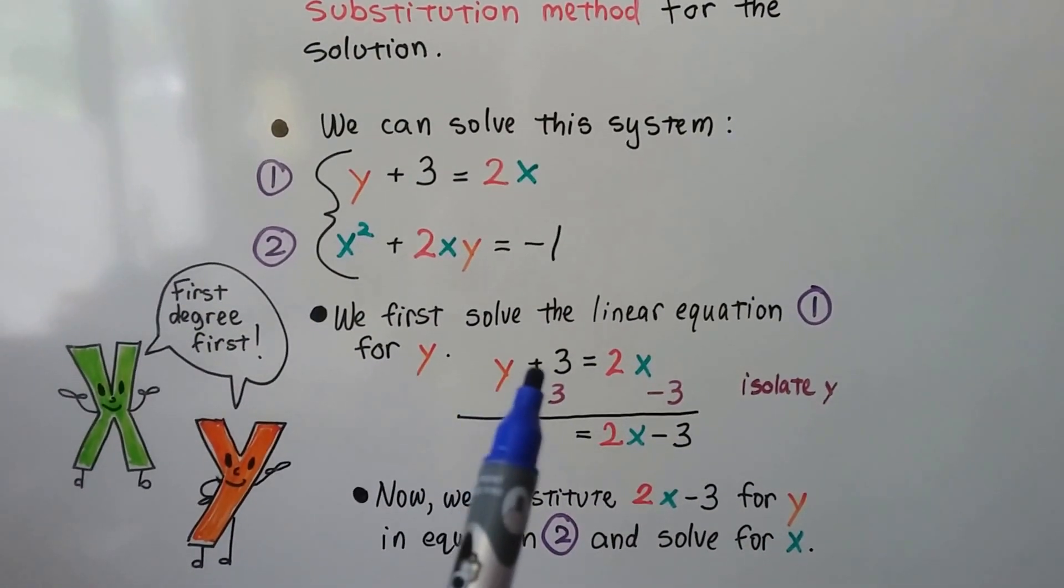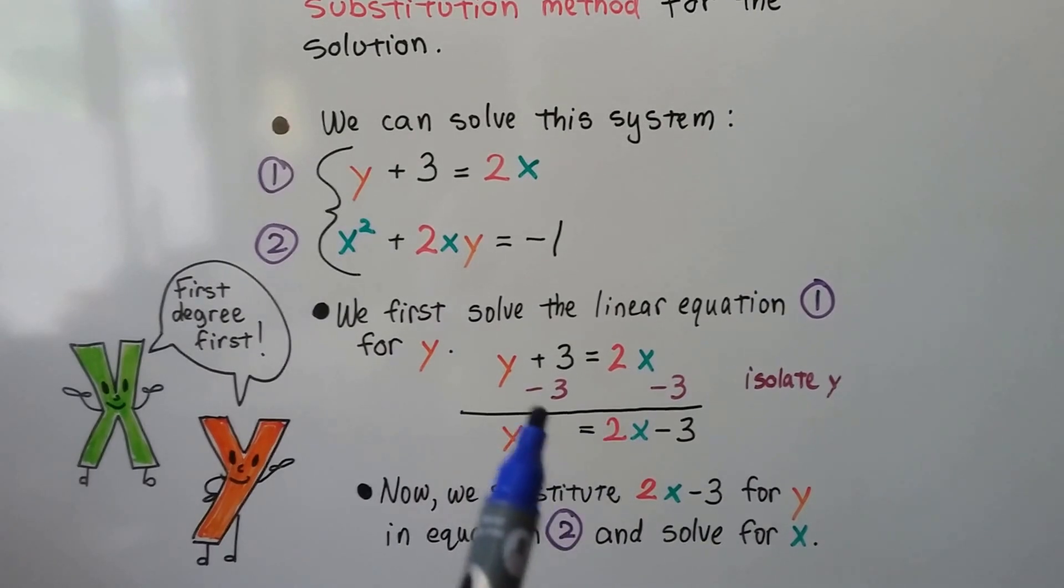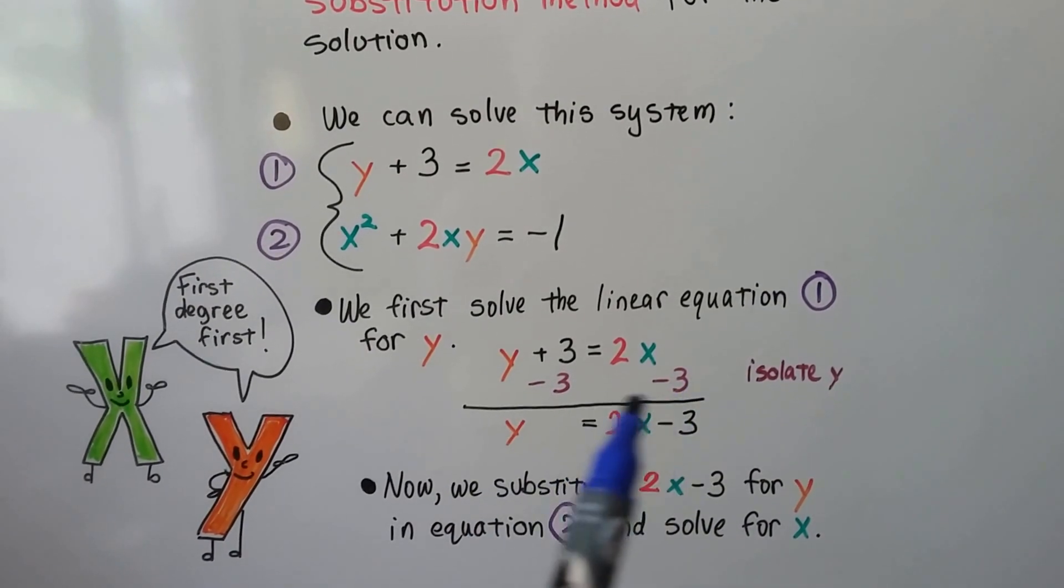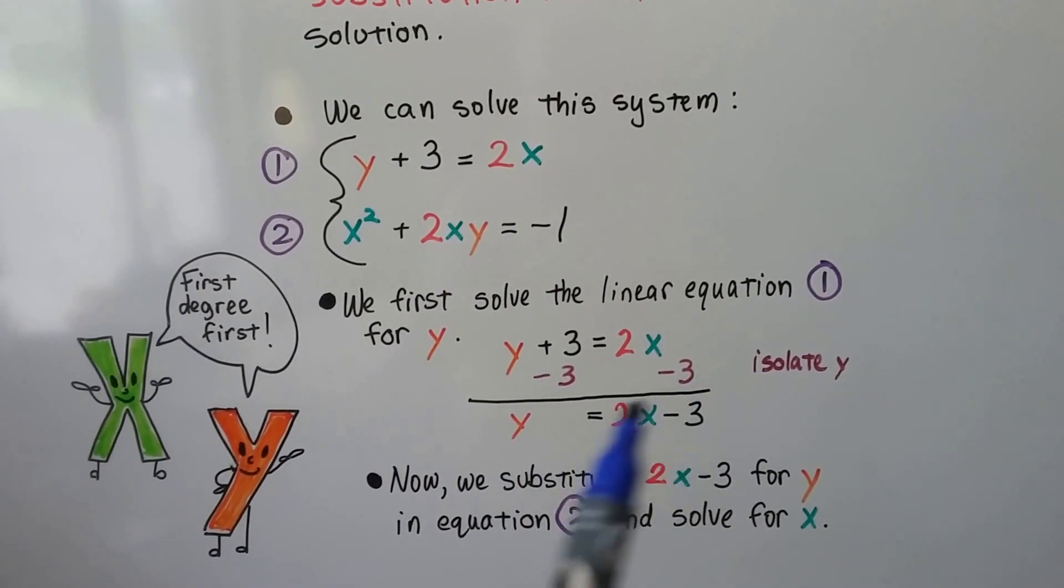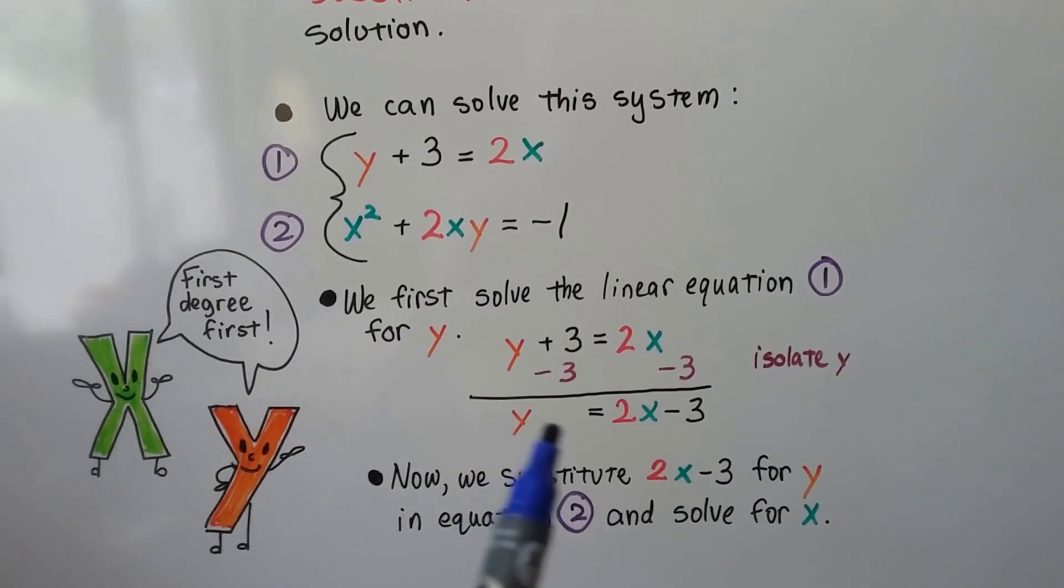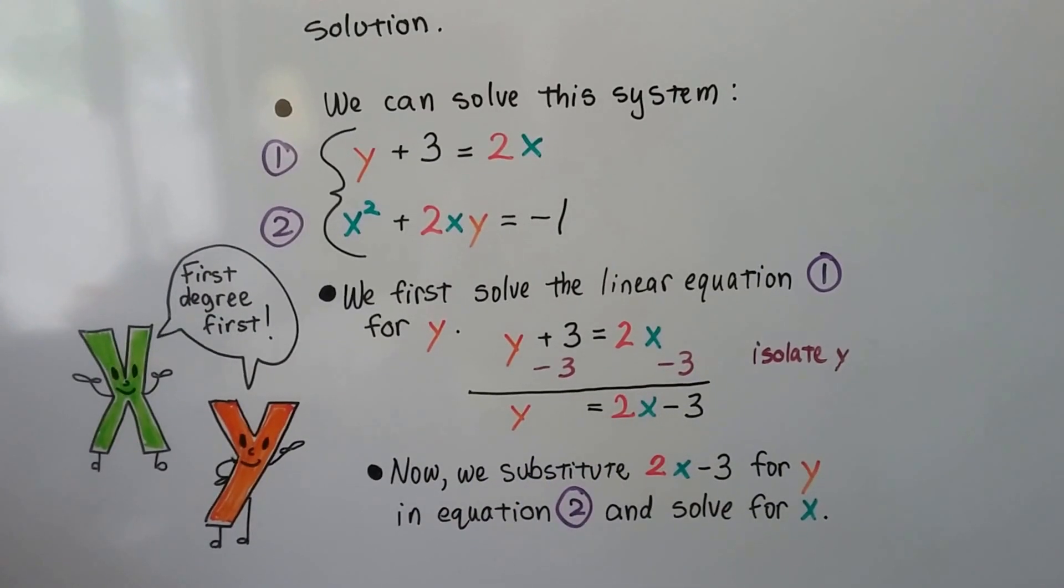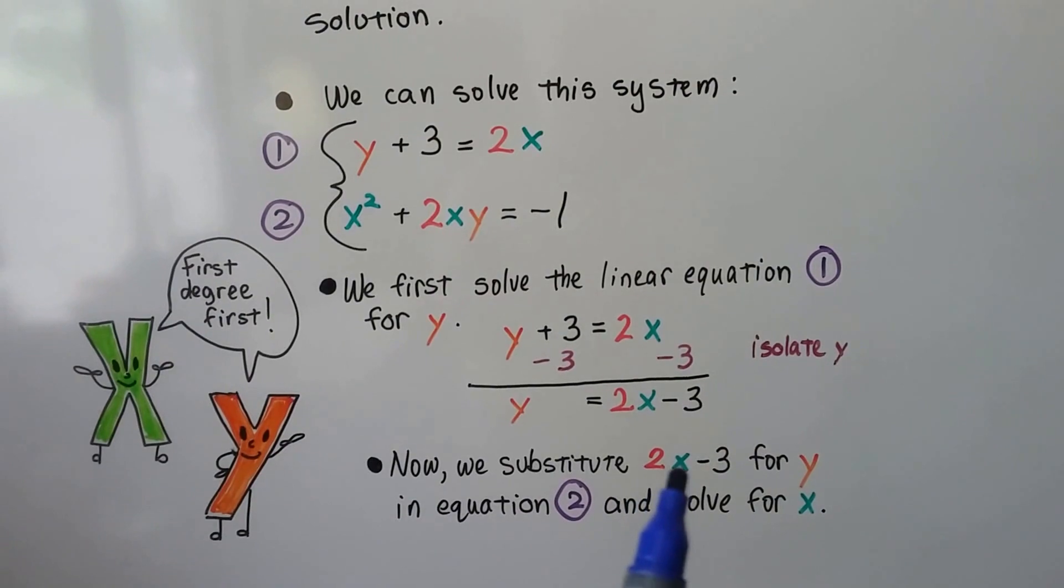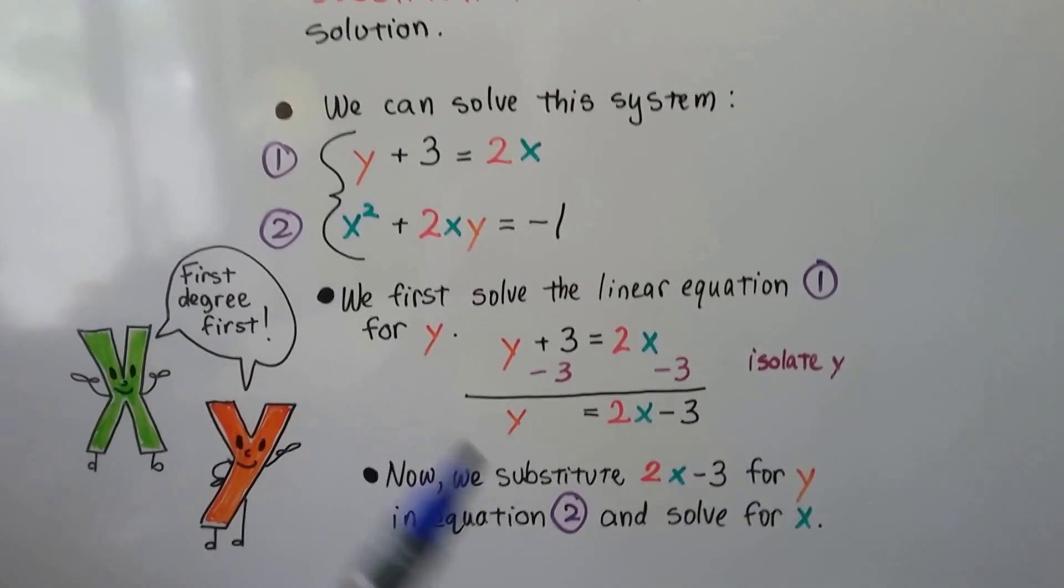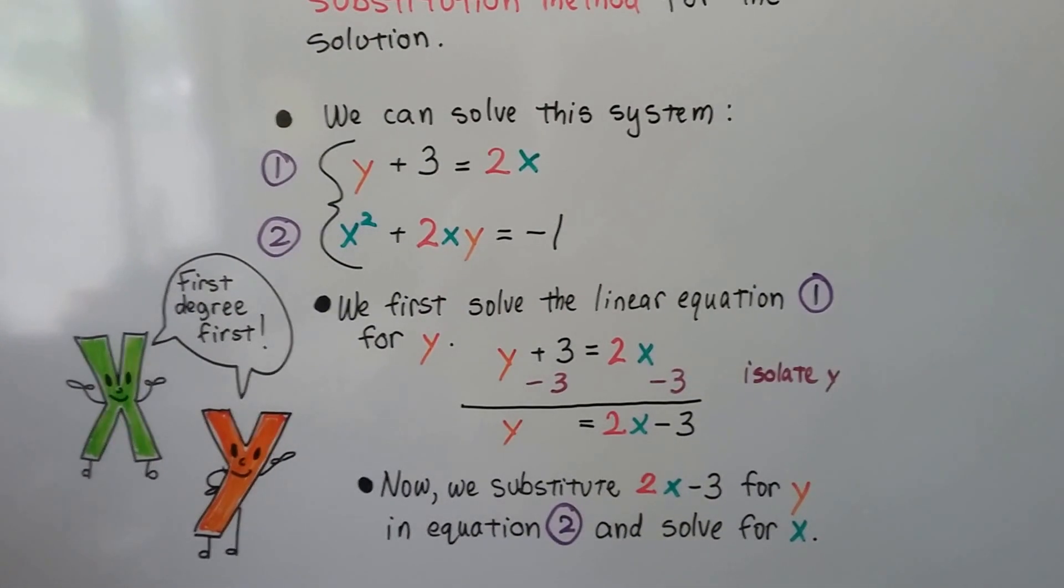We have y + 3 = 2x. We can add a negative 3 to each side of the equation to isolate y, and we get y = 2x - 3. Now we're going to substitute that 2x - 3 for the y in the second equation and solve for x.